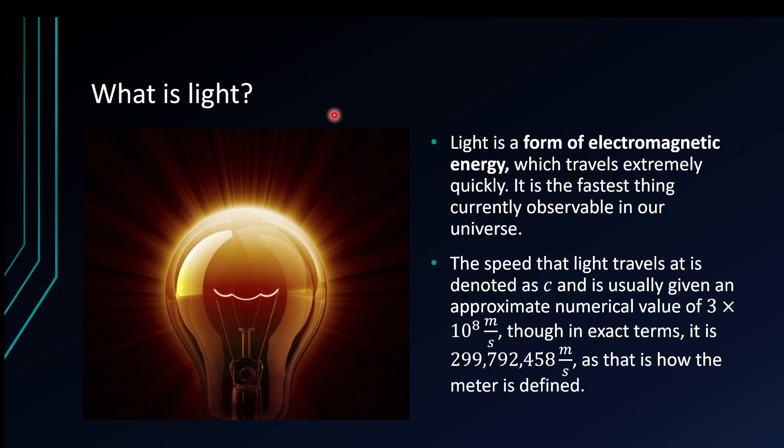Anyways, one contested definition in physics is what actually is light. Well, light is what's known as a form of electromagnetic energy. Any form of energy that travels at the speed of light is considered to be electromagnetic. We will properly define what electromagnetic is when we get to the waves chapter, but for now you can just accept that light is this thing known as electromagnetic energy.